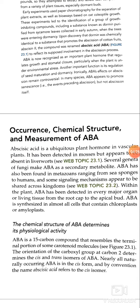The chemical structure of ABA determines its physiological activity. ABA is a 15-carbon compound that resembles the terminal portion of some carotenoid molecules. The orientation of the carboxyl group at carbon 2 determines the cis and trans isomers of ABA. Nearly all naturally occurring ABA is in the cis form, and by convention the name abscisic acid refers to the cis isomer.